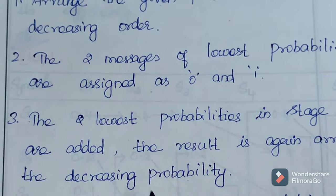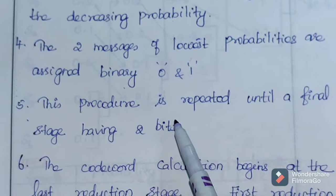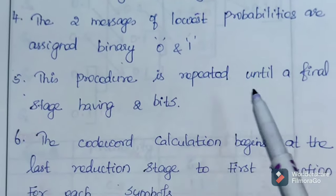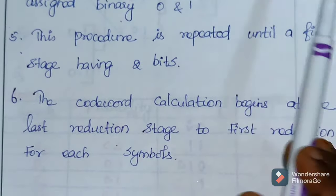The procedure is: first, arrange the given probabilities in decreasing order, so highest to lowest. The two messages of lowest probabilities are assigned as 0 and 1. The two lowest values get 0 and 1 code assigned.